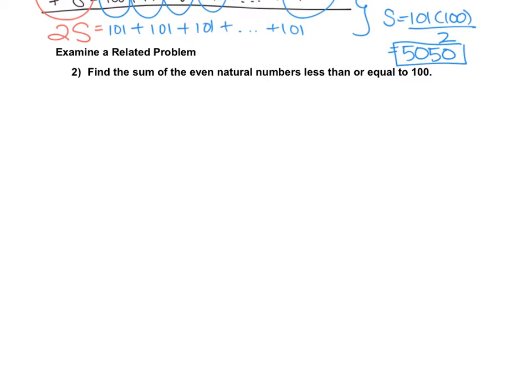Now, for number two, we're going to use the strategy of examining a related problem. What we were just looking at was the sum of the natural numbers from 1 to 100. The way number two is different is it's still saying to find the sum, but it wants us to find the sum of the even natural numbers less than or equal to 100. Remember, even would mean anything divisible by 2.